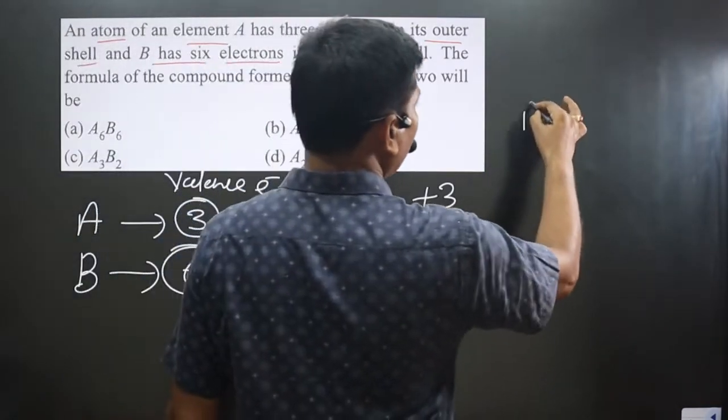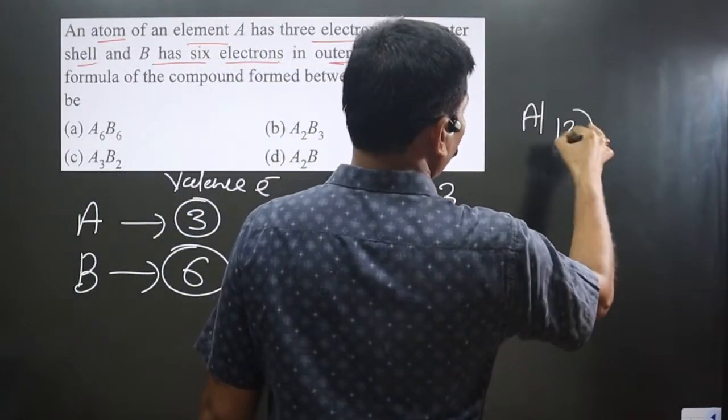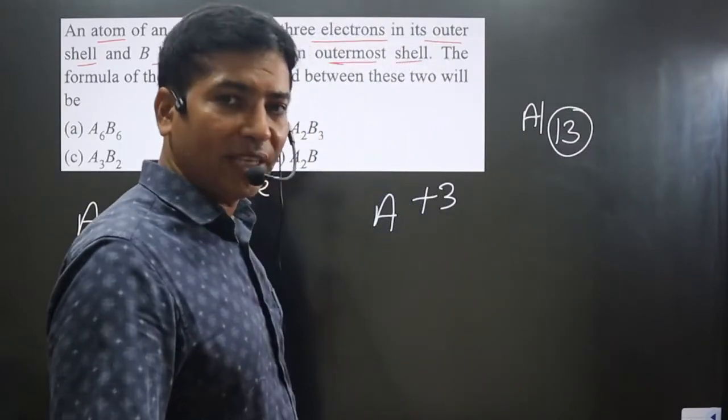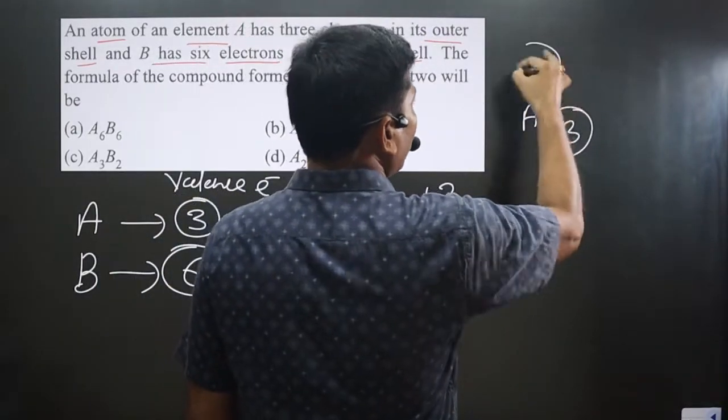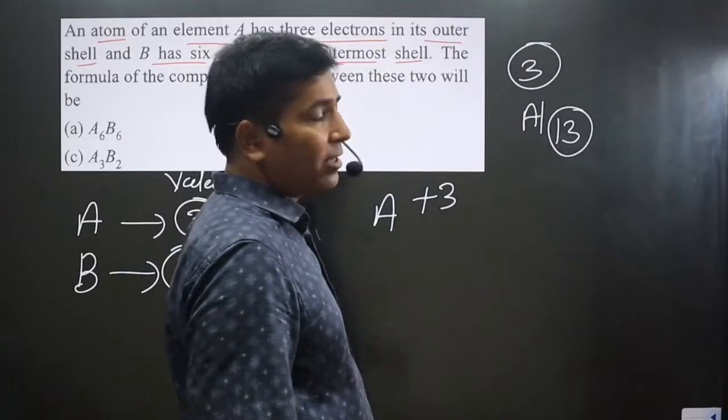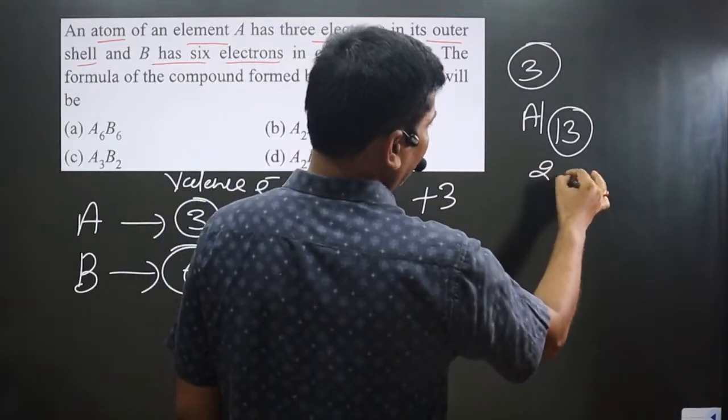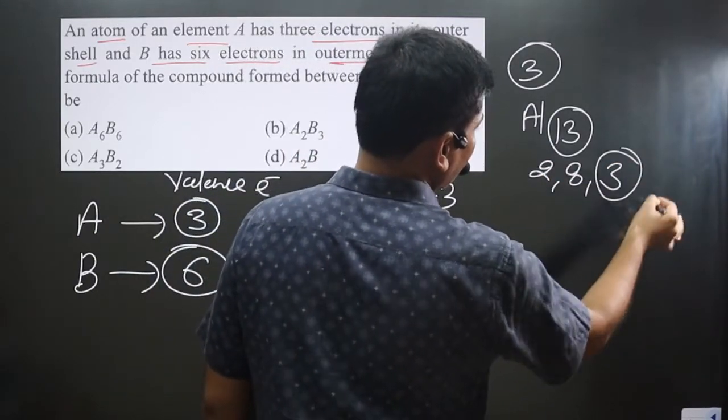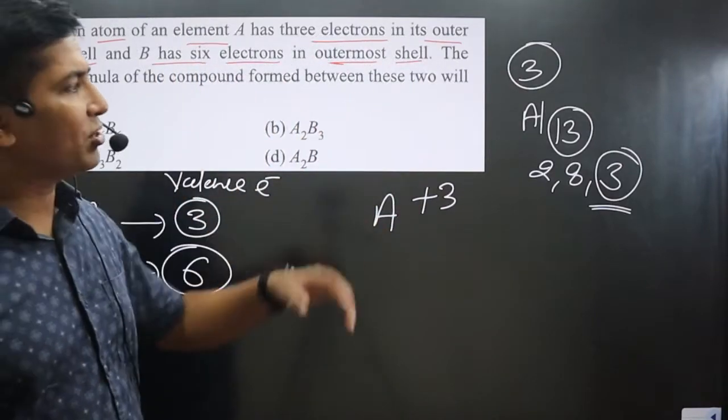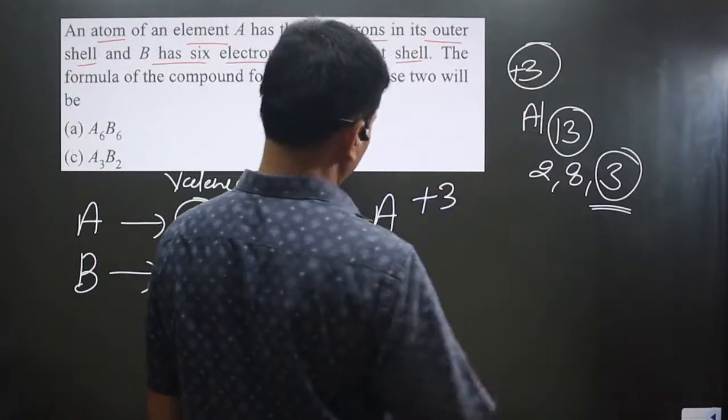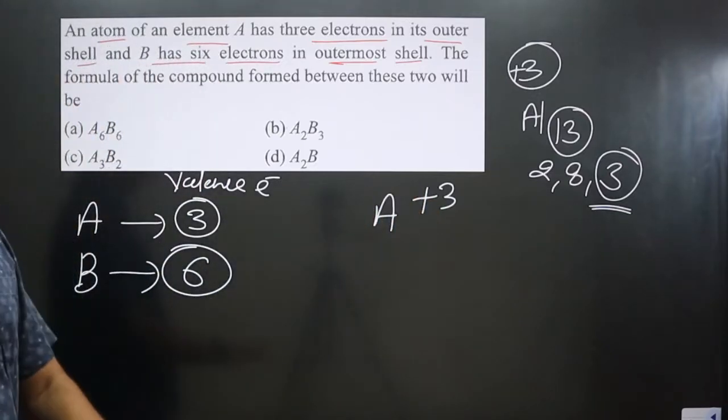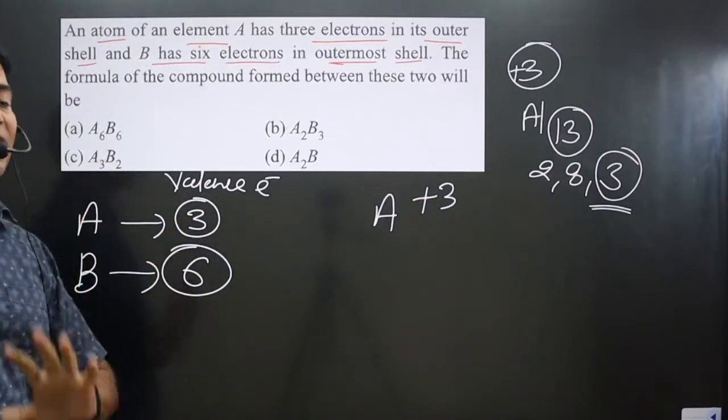Like let's say if I talk about aluminum. Aluminum, its atomic number is 13. How many valence electrons it has? Three, because it is present in 13 group. We can write it two, eight and three. It loses three electrons, then it will carry plus three charge.